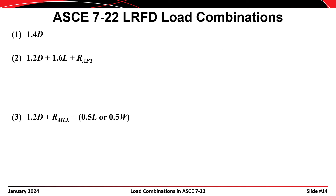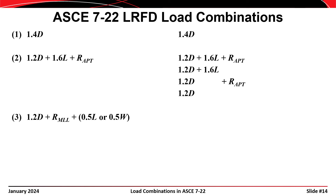Now let's consider the possibility that some of the transient and environmental loads may not be acting on the structure at any given time. This doesn't really affect the first combination, since it includes only the permanent dead load. When we consider all possible permutations of the second load combination, we consider: both live load and roof load acting with dead load; only live load acting with dead load; only roof load acting with dead load; and the trivial case where neither live load nor roof load acts with dead load.